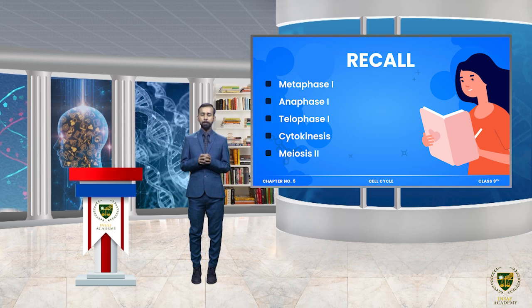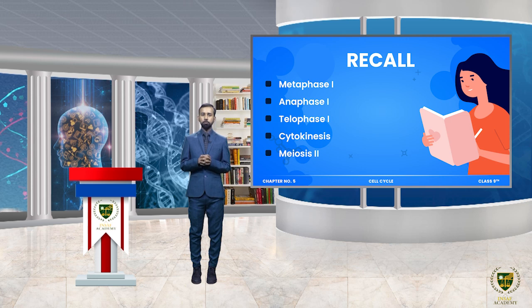Meiosis 1 complete ہونے کے بعد جو cells ہیں وہ interphase 2 میں enter ہوتے ہیں - interphase 2 میں genetic material کی synthesis phase involve نہیں ہوتی۔ Interphase 2 میں کچھ دیر rest کرنے کے بعد cells اپنے آپ کو دوبارہ divide کرنے کے لیے prepare کر لیتے ہیں۔ پھر start ہوتی ہے meiosis 2 - meiosis 2 کی prophase میں chromosomes دوبارہ سے organize ہوتے ہیں یعنی جو loose thread-like chromatin ہے وہ organize ہو کر chromosomes بناتے ہیں، پھر spindle fibers کی formation ہوتی ہے۔